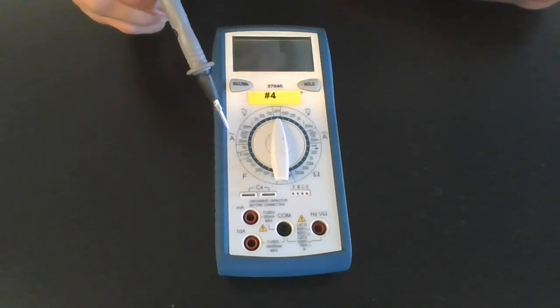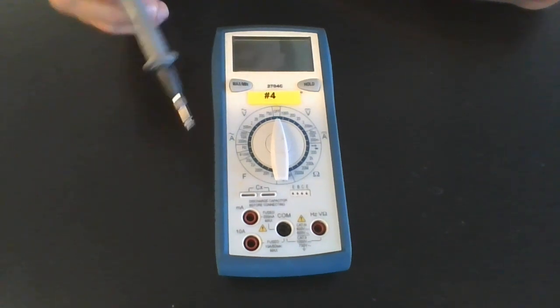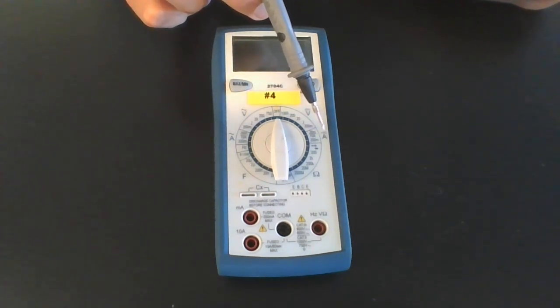Now, the second measurement is it measures amperes, either in alternating current, which we're not going to use, or in continuous current.